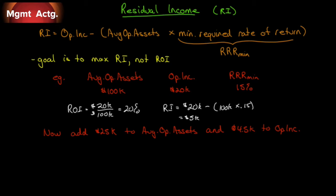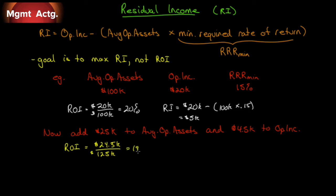Now let's see what happens when we add $25,000 to our operating assets, and that addition also adds $4,500 to our operating income. Our new ROI is $24,500 over $125,000, which gives us 19.6% ROI — a drop from 20% to 19.6%. A manager assessed on ROI would say that hurts their ROI.